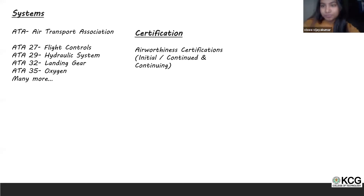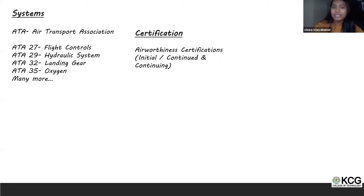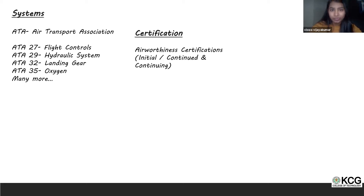Before an aircraft can fly, it needs to go through certain certifications because aircraft have the highest safety standards. The certification is called the Airworthiness Certificate, and it happens in three levels: initial airworthiness certification, continued airworthiness, and continuing airworthiness. The initial airworthiness certification is done during development, once the aircraft is ready to start operations, and requires something called the Type Certificate.